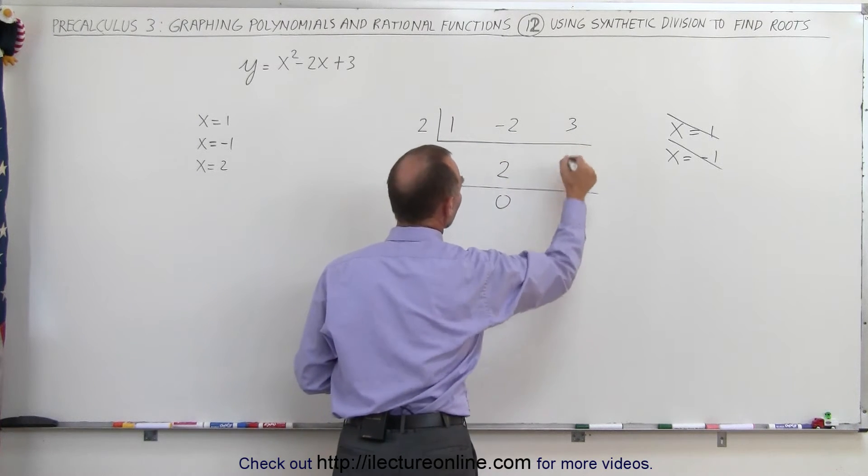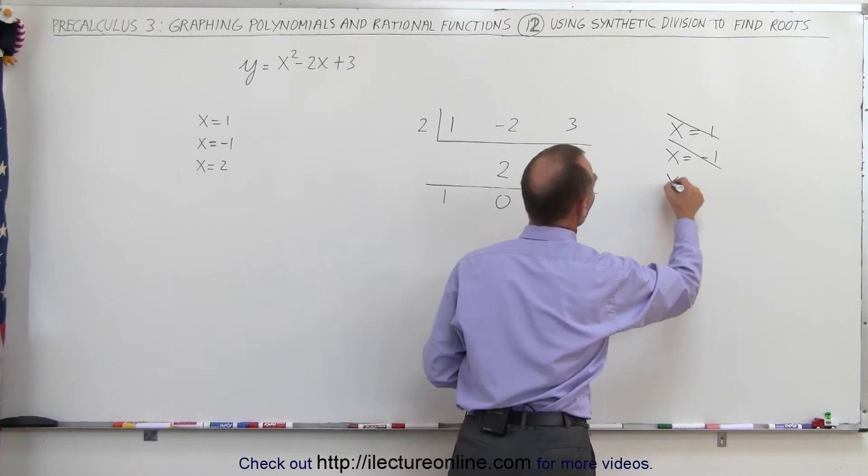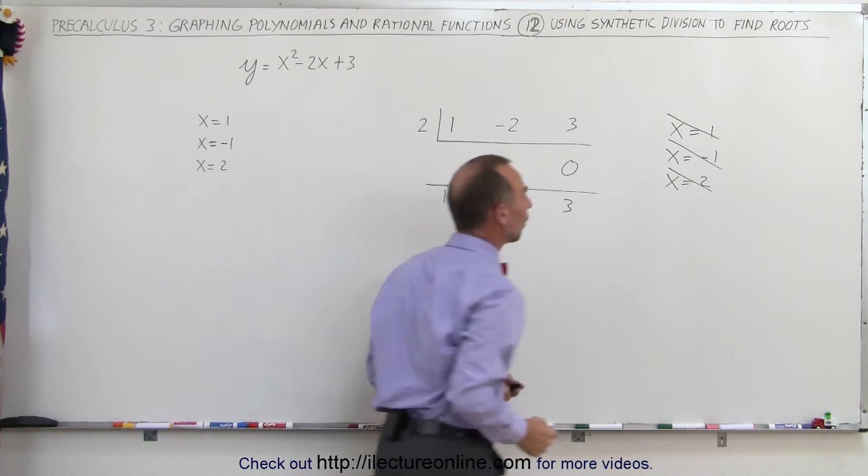2 times 0 is 0, add it together and you get 3. Again, it's not 0, so x equals 2 is not one of the roots.